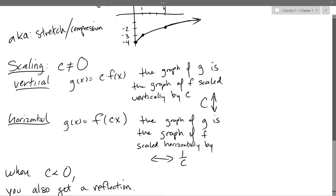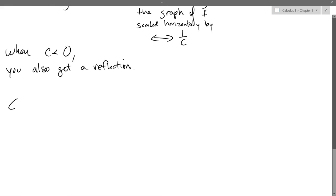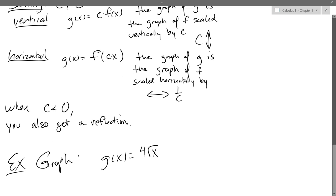We'll keep going with the square root graph. We'll graph g(x) = 4√x. First of all, horizontal or vertical? We're multiplying the function of x by 4, not the x itself. If the times 4 was right next to x, it would be horizontal. So we have a vertical stretch. c times f(x) is a graph of f scaled vertically — in our case, by 4.